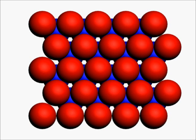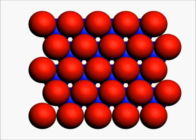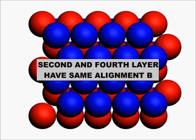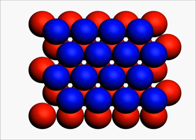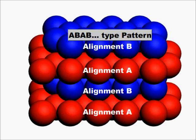If we do this we can see that the first and the third layer have the same alignment A. With similar reasoning we keep a fourth layer on top of the third layer and see that the second and fourth layer have the same alignment B. This pattern of closed packing is called ABAB type pattern.